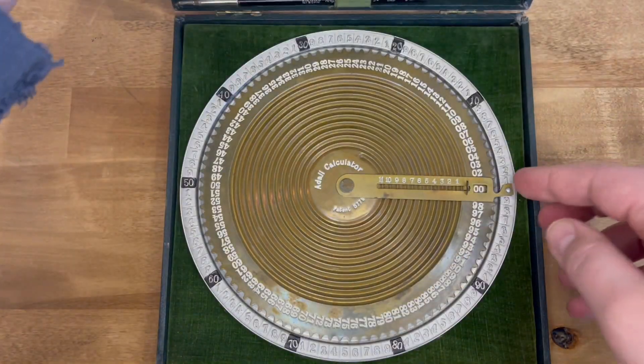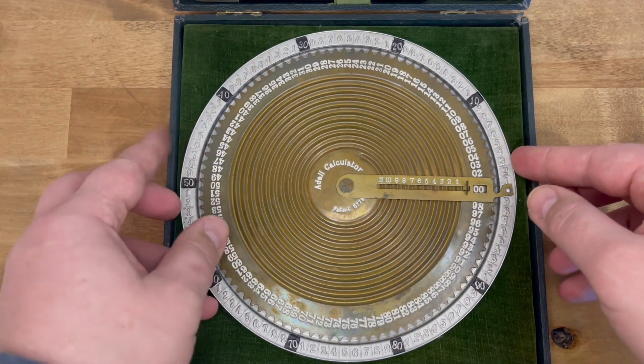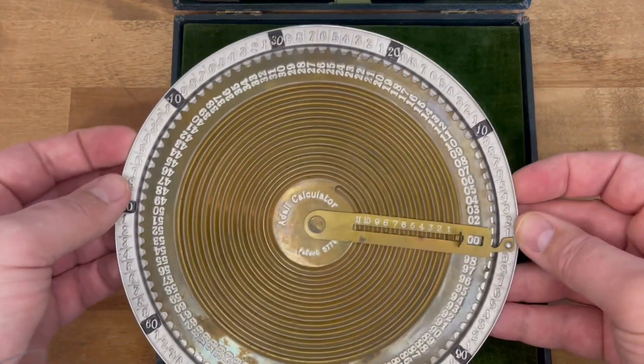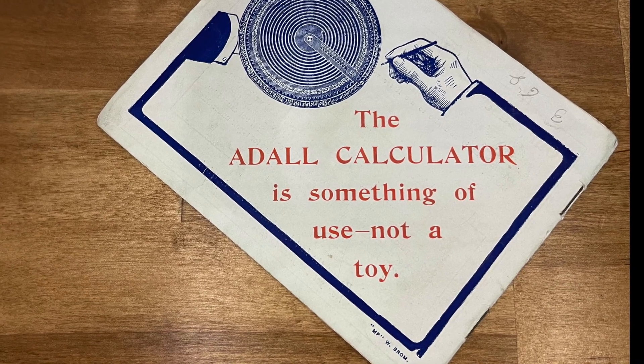This is the Adol Calculator, or maybe Adol Calculator, from around 1907. It was something of use, not a toy.